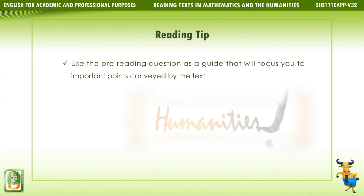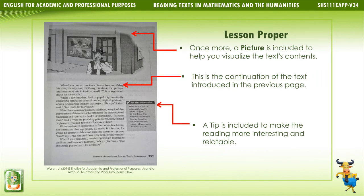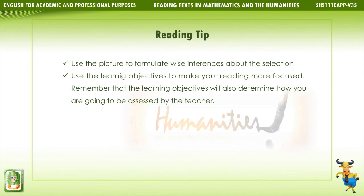Reading tip: Use the pre-reading question as a guide that will focus you on important points conveyed by the text. Lesson proper: The picture is intended to help you visualize the contents of the text. This portion features the text's title as well as its author — the citation of the author's name is called the byline. The learning objectives are the specific skills you have to master after going through the lesson. A picture is also included to help you visualize the text's contents, along with a continuation of the text and a tip to make the reading more interesting and relatable. Use the learning objectives to make your reading more focused, as they will also determine how you are going to be assessed by the teacher.